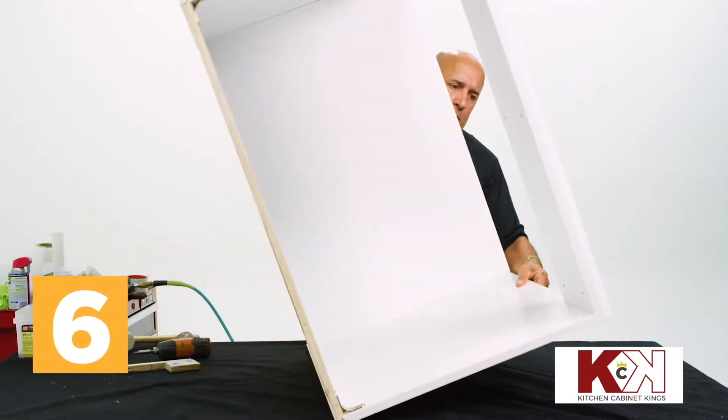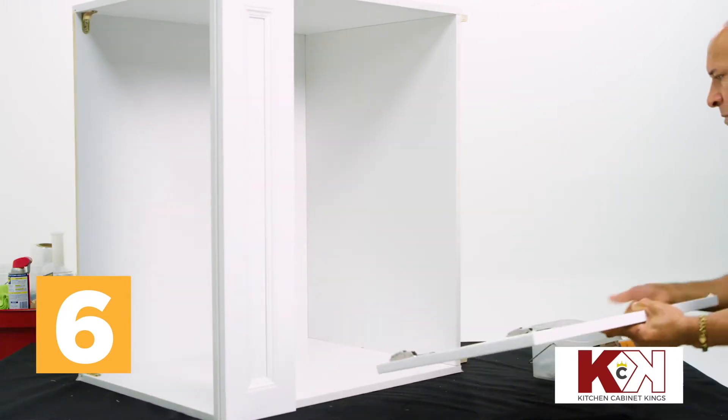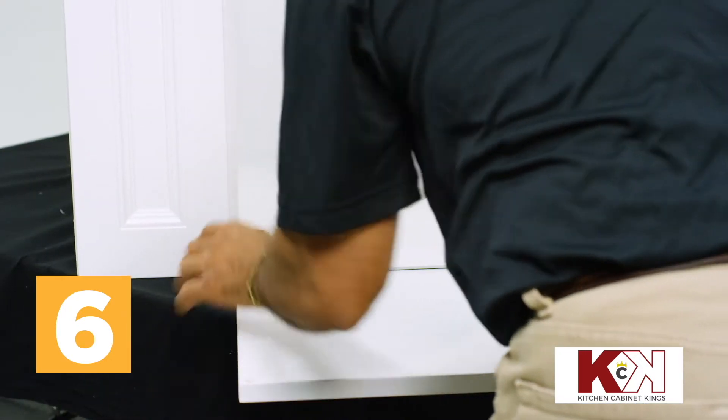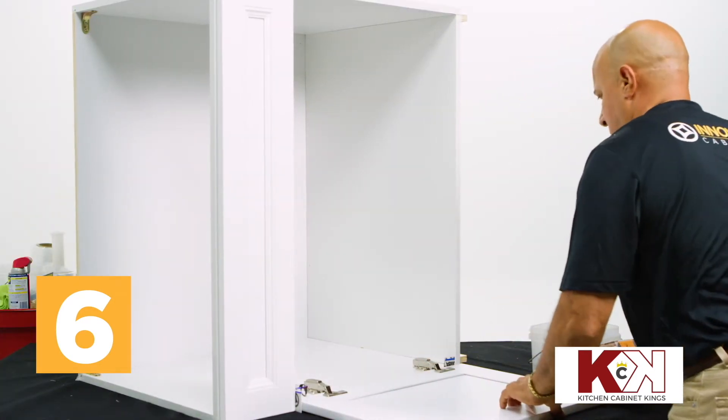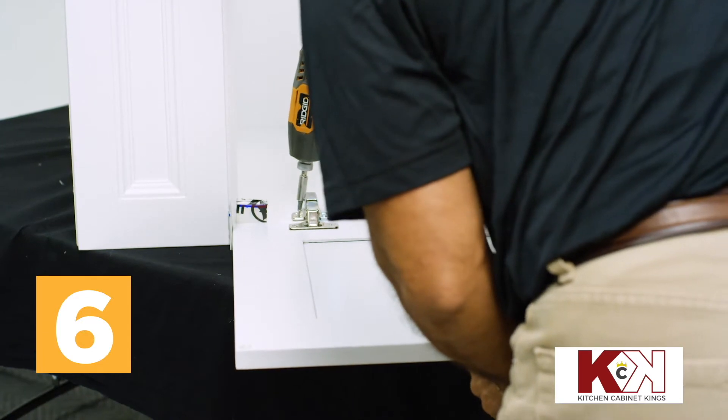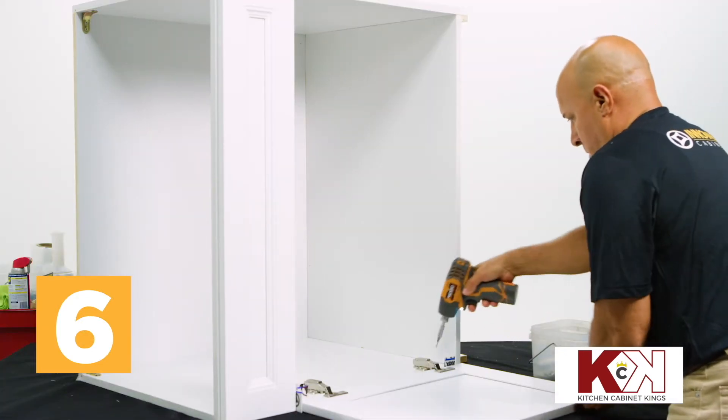Stand the assembled unit on end so one of the sides is flat on your workstation, then retrieve one of the doors. Align the door with this side so there is a space about the thickness of a credit card between the two pieces. Set the free hinge ends flush with the side, then secure with the drill and prepackaged screws.